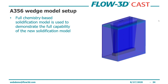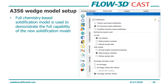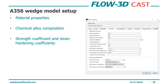We set this up in Flow3D Cast — it's actually a completely trivial model to set up, just a geometry with a die around it. The full chemistry model was used to demonstrate the full capability of the new solidification model; this is just a button you click — the full chemistry-based solidification model — in the solidification options of your model section. We also entered our properties for K and N for the mechanical properties.